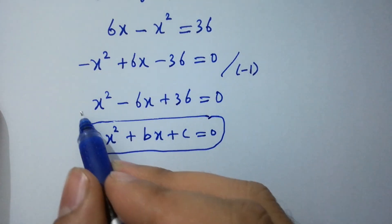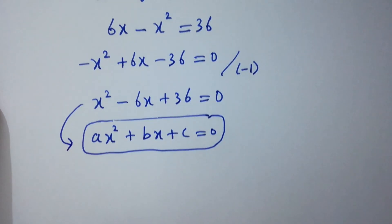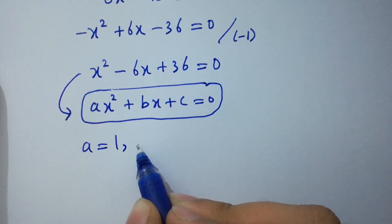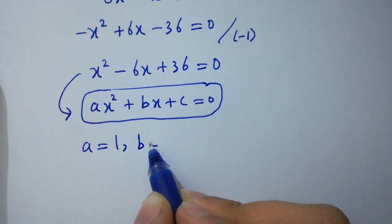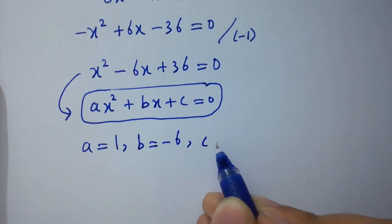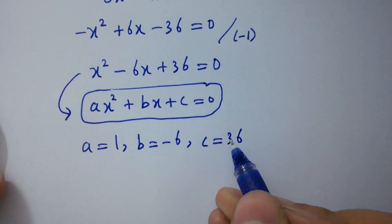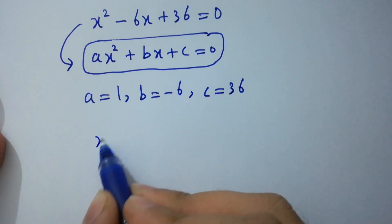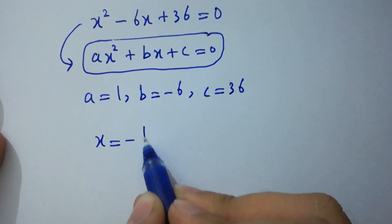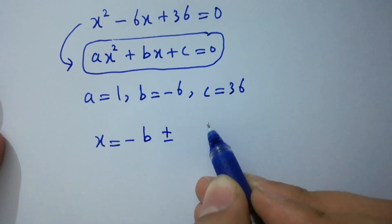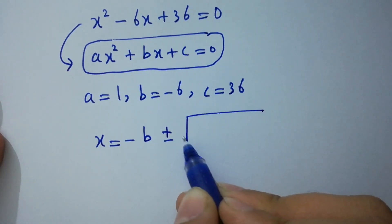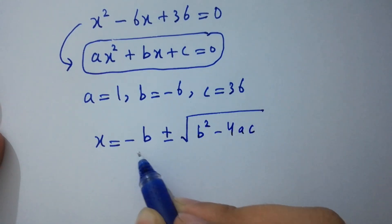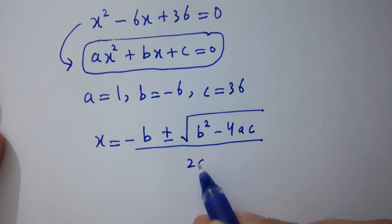By comparing, we have a equals 1, b equals minus 6, and c equals 36. Applying the quadratic formula: x equals negative b plus or minus square root of b squared minus 4ac, all over 2a.